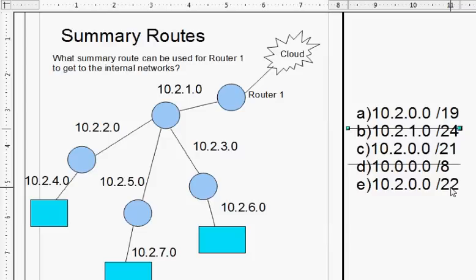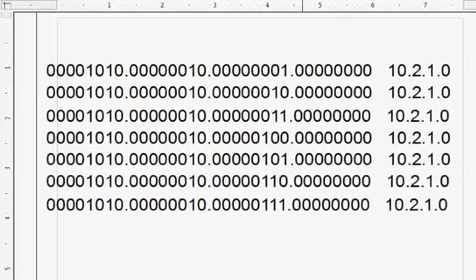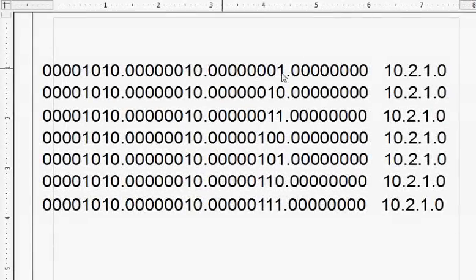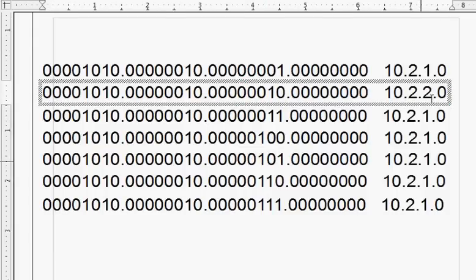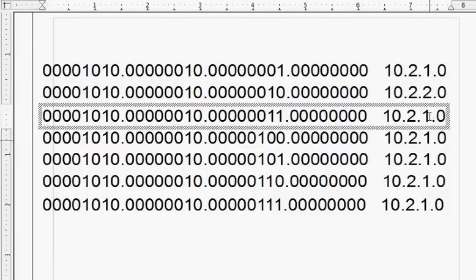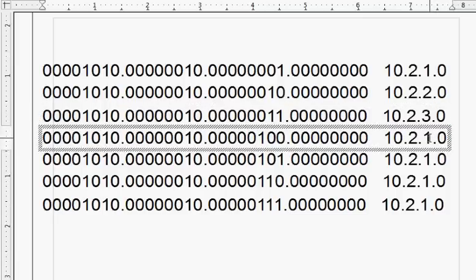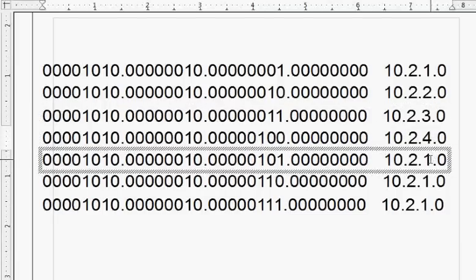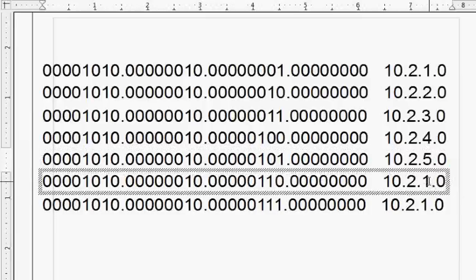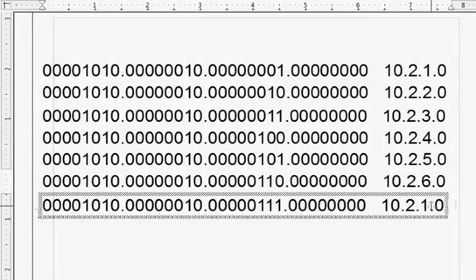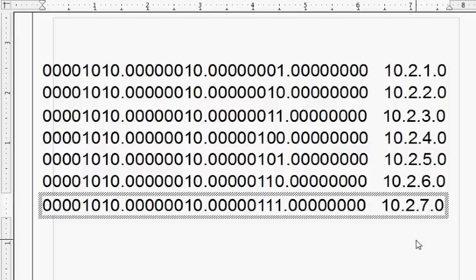Well, the way you work this out is you write out all of these networks that you're going to summarize in binary. So I'm going to write out the 10.2.1 to the 10.2.7 networks in binary, and when you do that it looks kind of like this. So here in binary, this is the 10.2.1, this one is the 10.2.2, and I forgot to change this, and this is the 3, and this is the 4, and this is the 5, and this one is the 6, and this one is the 7.